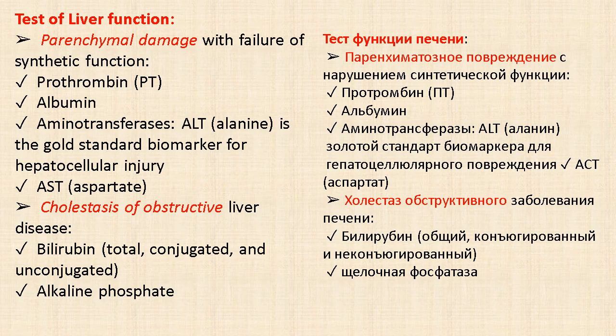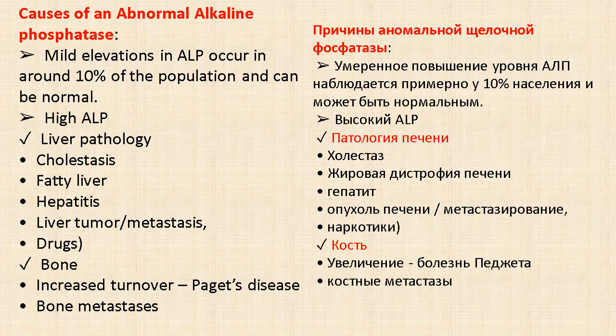Liver function tests include assessment of parenchymal damage with failure of synthetic function: prothrombin, albumin, aminotransferases. ALT (alanine aminotransferase) is the gold standard biomarker for hepatocellular injury. AST (aspartate aminotransferase) is also measured. Cholestatic markers of obstructive liver disease include bilirubin (total, conjugated and unconjugated) and alkaline phosphatase. Causes of abnormal alkaline phosphatase: mild elevation occurs in around 10% of the population and can be normal. High alkaline phosphatase may indicate liver pathology including cholestasis, fatty liver, hepatitis, liver tumors, metastasis, drugs, and bone disease including Paget's disease and bone metastasis.